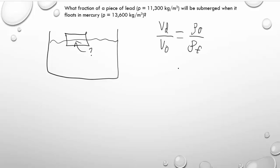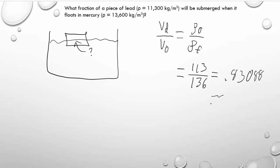All we have to do is plug in numbers for our densities. We've got 11,300 divided by 13,600 — we can chop off the zeros — and we get 0.83088, or approximately 83.1% will be submerged. So my picture was not drawn to scale. 83% would be under, and the rest would be sticking out of the top.